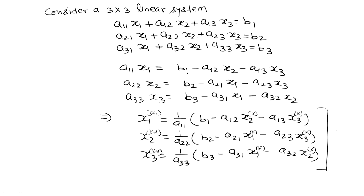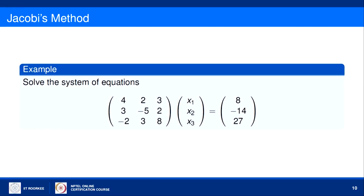The Jacobi method is called the method of simultaneous displacement because for finding the k+1 values of each component x₁, x₂, x₃, we use the values of all variables from the previous iteration. Simultaneously, for getting the values at k+1 iteration we use the values from the kth iteration. Now we will take an example and solve it using the Jacobi method.